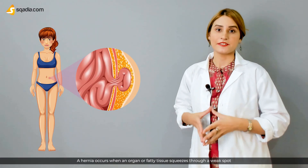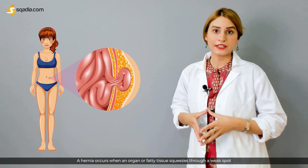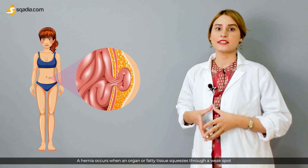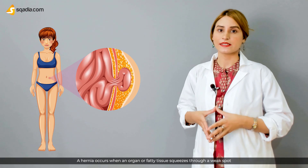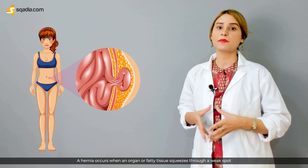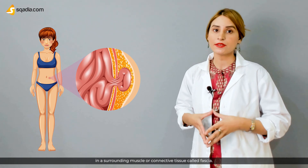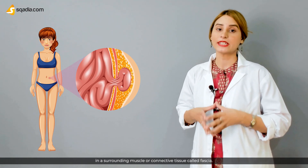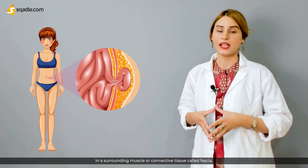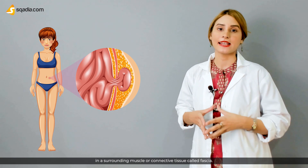A hernia occurs when an organ or the fatty tissue squeezes through a weak spot in a surrounding muscle or connective tissue, which is called fascia.